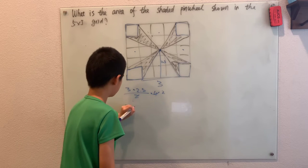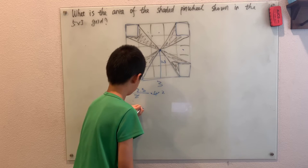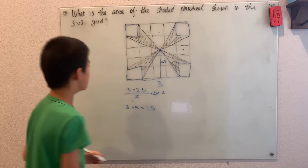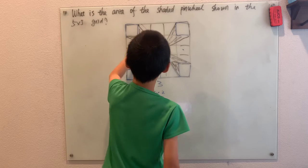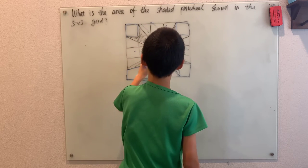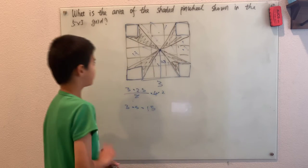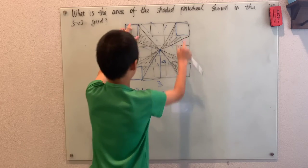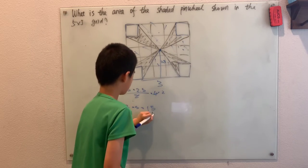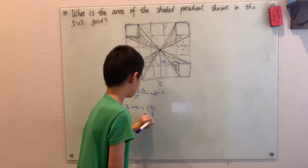2 times 2.5 is 5, times 3 is 15. Okay, so now we have this whole 5x5 grid. So that means these 4 triangles make 15, and then we have to add on these 4 for the 4 squares. Equals 19.